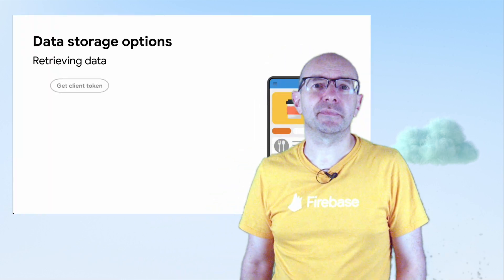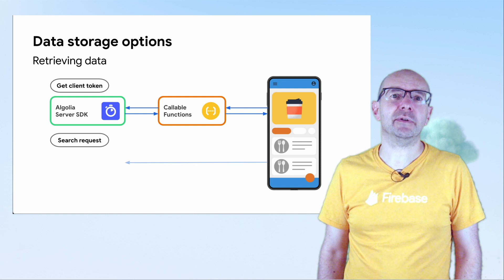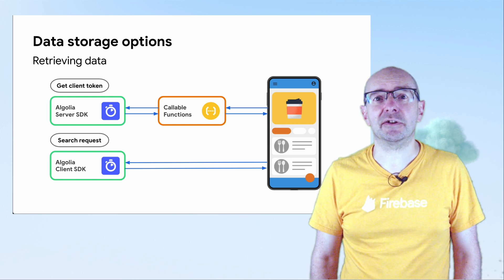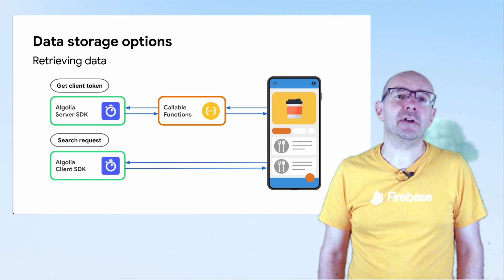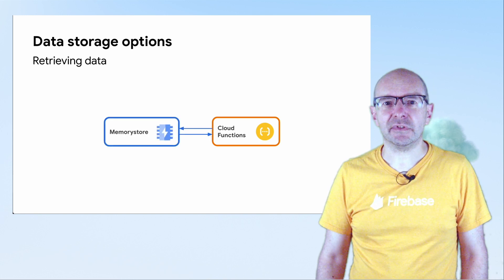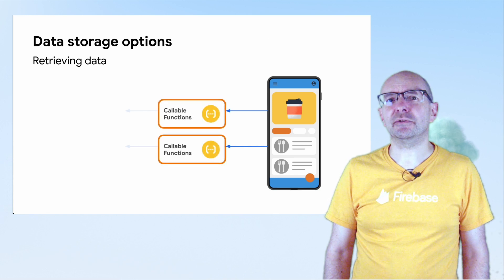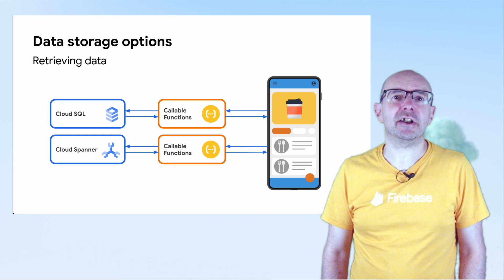Now that we have data in our respective storage locations, how do we get it out? Algolia has client-side SDKs like Firebase, and they can be secured with a JSON web token to control visibility of your search results depending on whether the user is staff, a registered customer or a member of the public. MemoryStore is probably best used only within Cloud Functions — there's very little to be gained by accessing it from the front end with a callable function. For access to relational database options, callable functions work really well; you can use them directly or via a service like API Gateway.